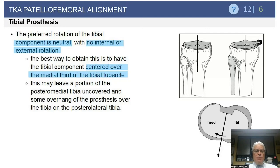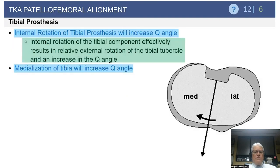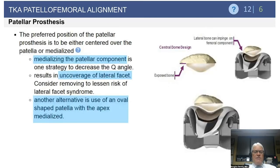Centering the tray over the medial third may leave a portion of the posterior medial tibia uncovered or a bit of overhang posterolaterally if you use a symmetric tray. Internally rotating the tibia lateralizes the tibial tubercle, increases the Q angle, and increases the risk of lateral patellar tracking. Medialization of the tibia will do the same thing.